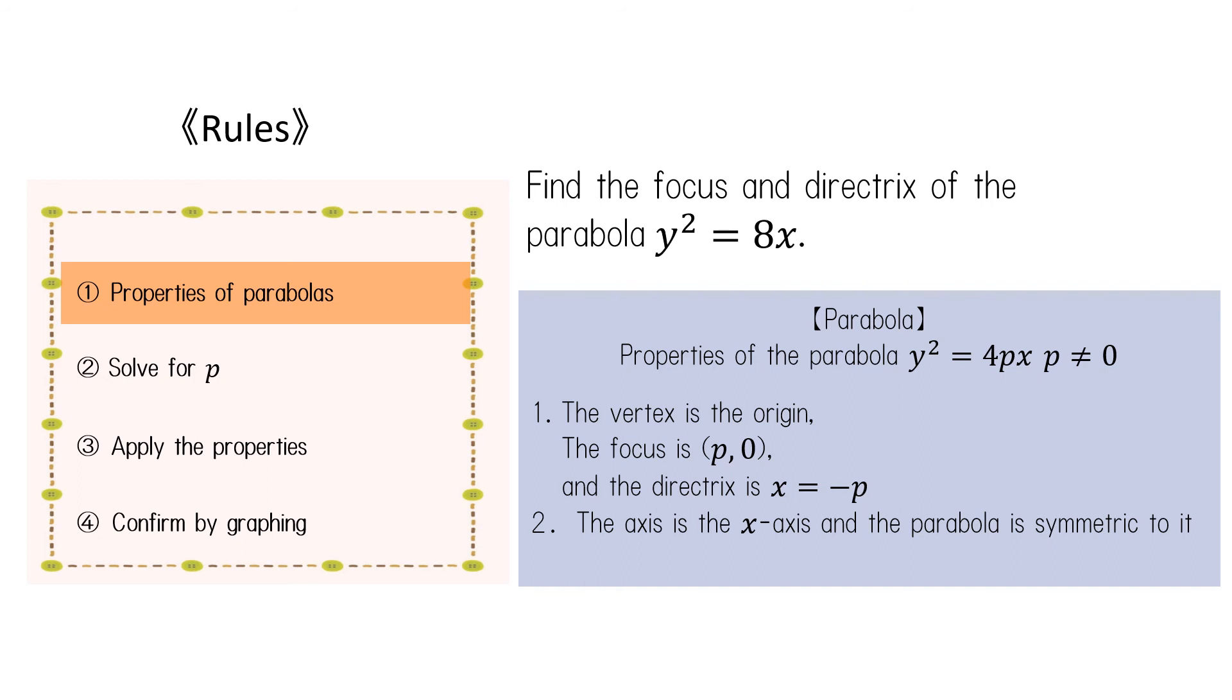First, we have the property y² equals 4px when p does not equal 0. The vertex passes through the origin. The focus is the point (p, 0) and the directrix is the line x equals negative p. The axis is the x-axis and the parabola is symmetric to it.